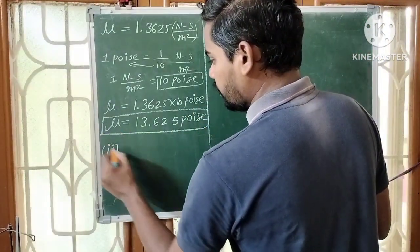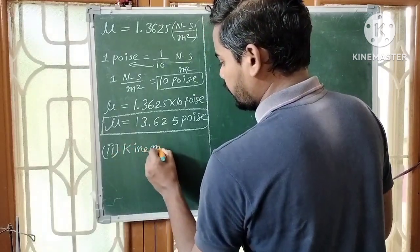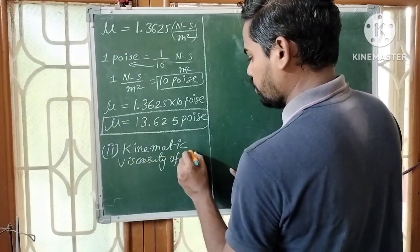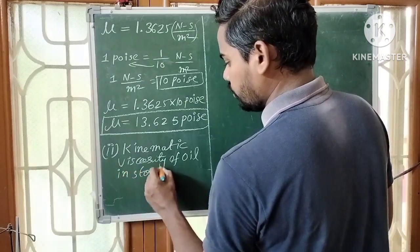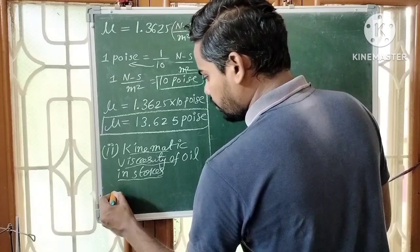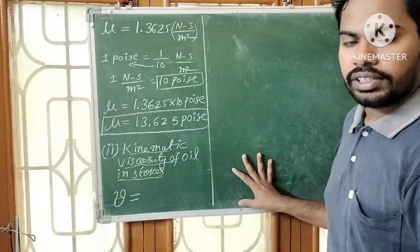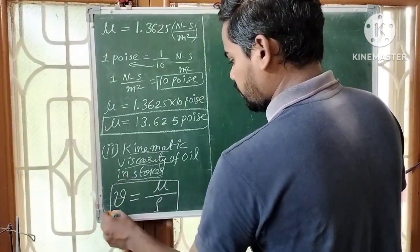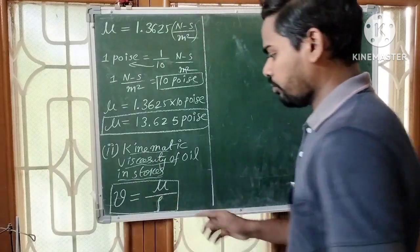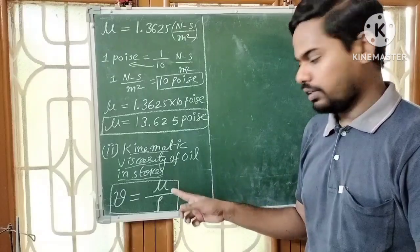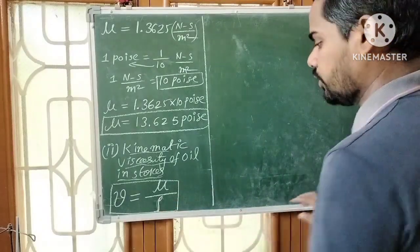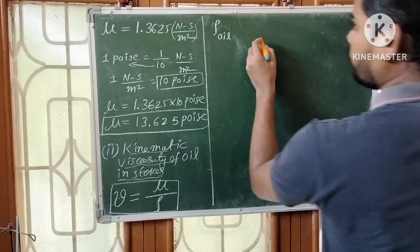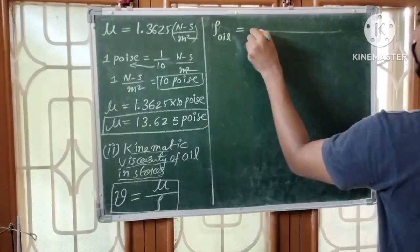Next, find kinematic viscosity of oil in Stokes. Kinematic viscosity, denoted by nu, is the ratio of dynamic viscosity to density of oil. So nu equals dynamic viscosity divided by density of oil. We need the density of the oil. The formula is: density of oil equals density of water times specific gravity.